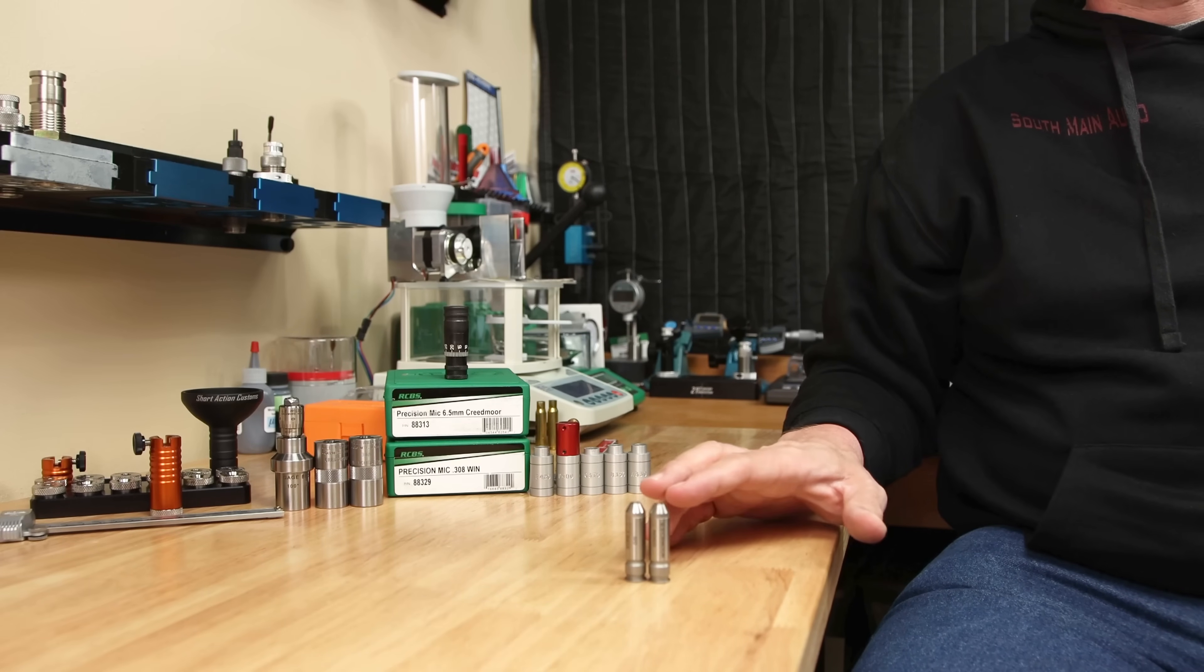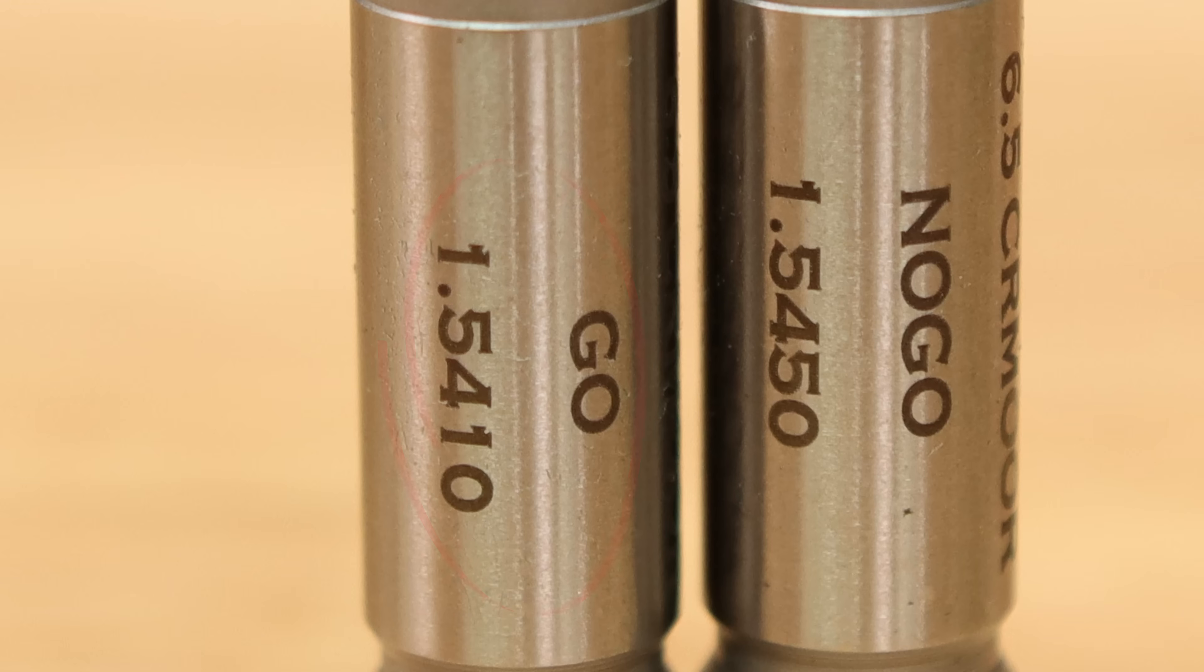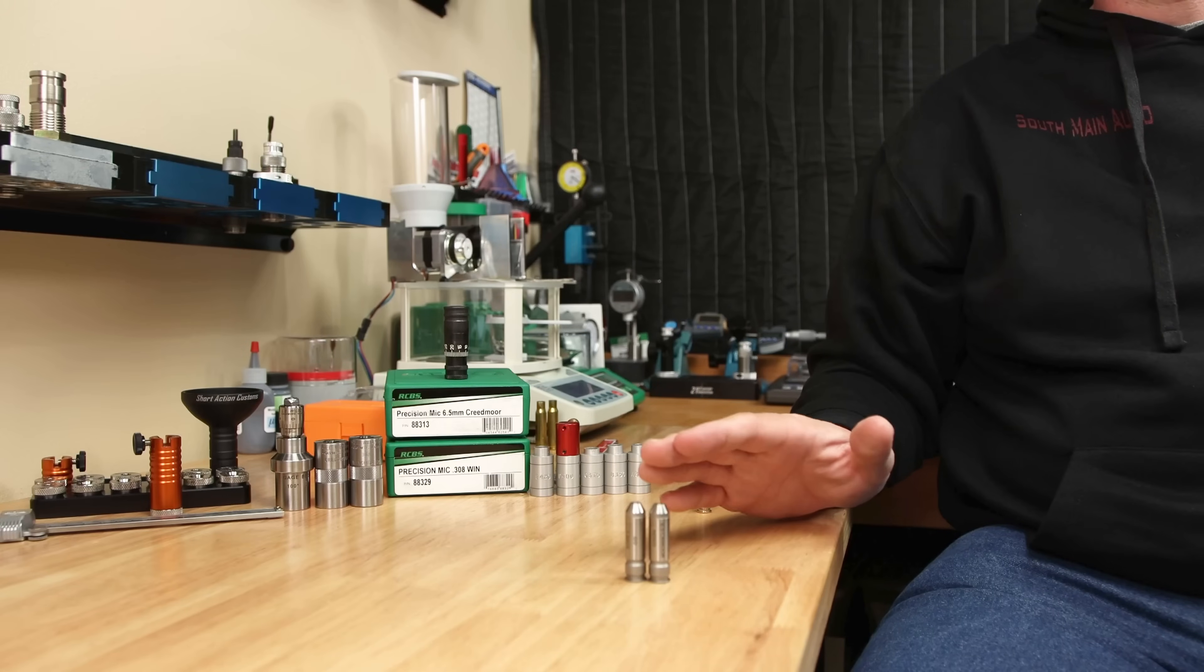An interesting point though when we talk about our go and no-go gauges later, the go gauge is the minimum, 1.5410 inches, and we'll be using that in just a minute. Now, if we go back to our cartridge drawing and we compare the same place on the drawing, we will see again the 0.400 dimension that corresponds to the drawing of 0.5438 minus 0.007 inches.